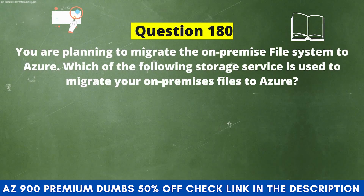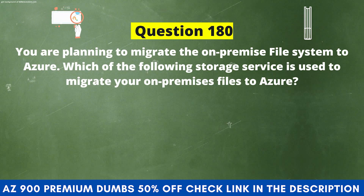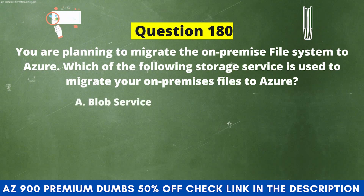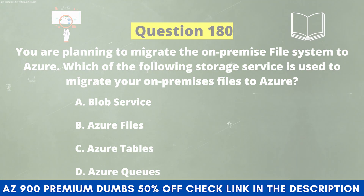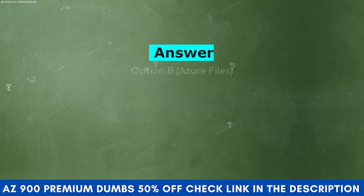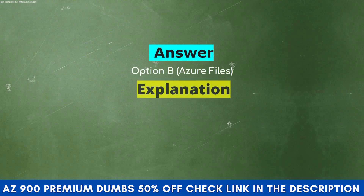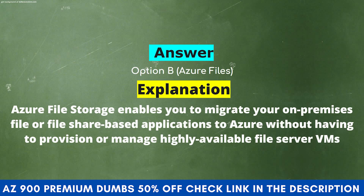You are planning to migrate the on-premise file system to Azure. Which storage service is used to migrate your on-premises files to Azure? Option A: Blob Service. Option B: Azure Files. Option C: Azure Tables. Option D: Azure Queues. The correct answer is Option B, Azure Files. Azure File Storage enables you to migrate your on-premises file or file-share based applications to Azure without having to provision or manage highly available file server VMs.